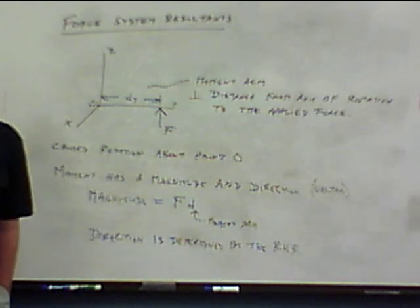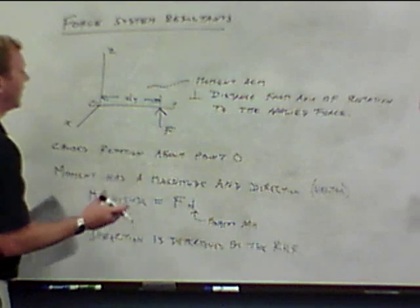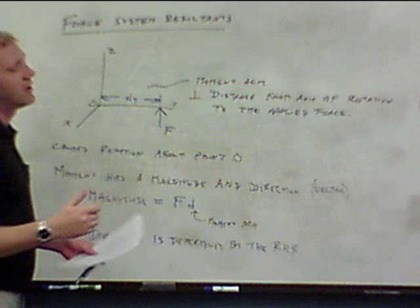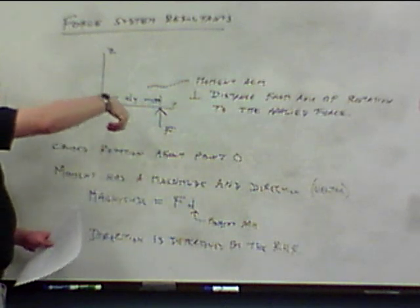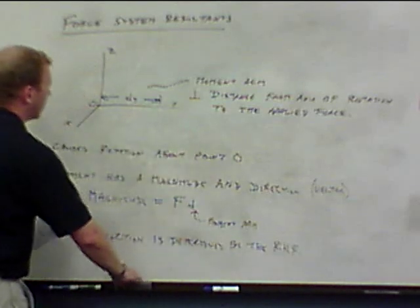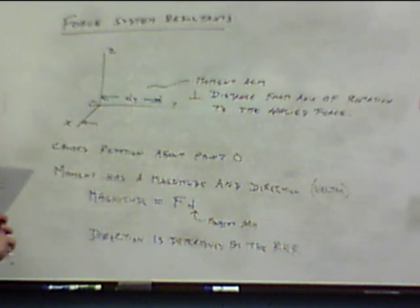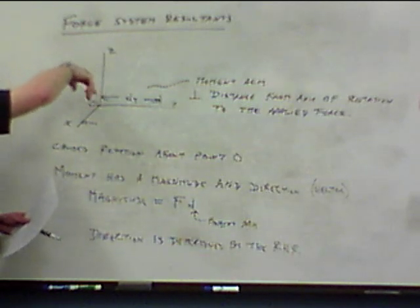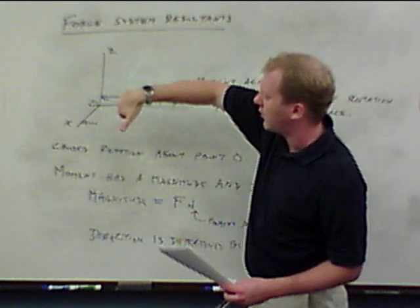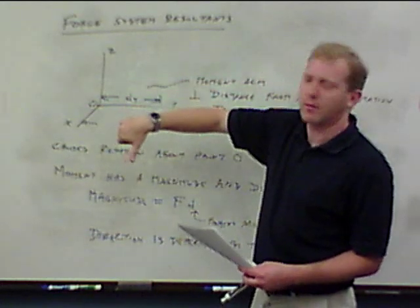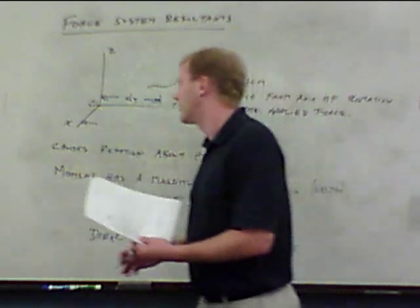Most of the time we'll be able to talk about moments being clockwise or counterclockwise, which is a little more intuitive. In the strictest sense, something counterclockwise about the x-axis causes a moment in the positive x direction. If this force were downward causing clockwise rotation, it would be negative x. If I move the force to the x-axis, that causes rotation in the negative z direction — my moment vector would be negative z, i.e., clockwise rotation around the z-axis.